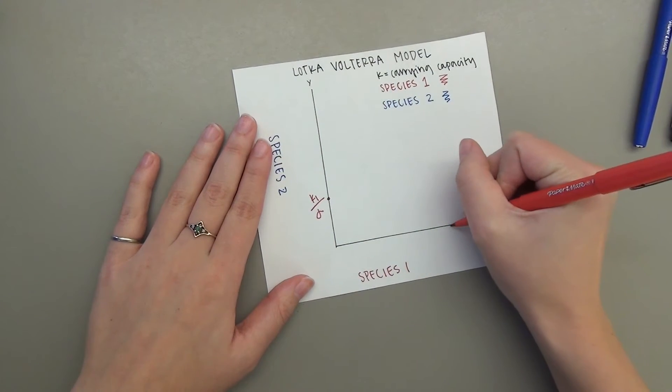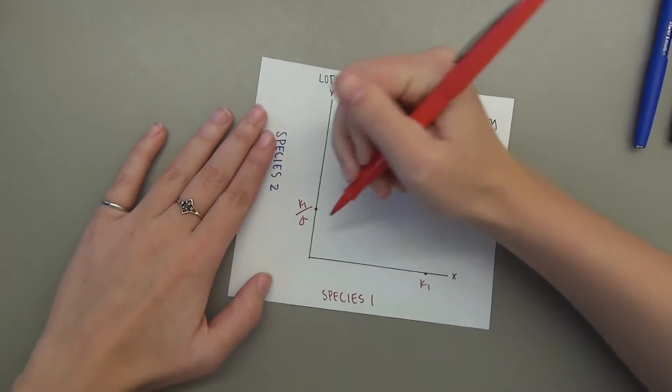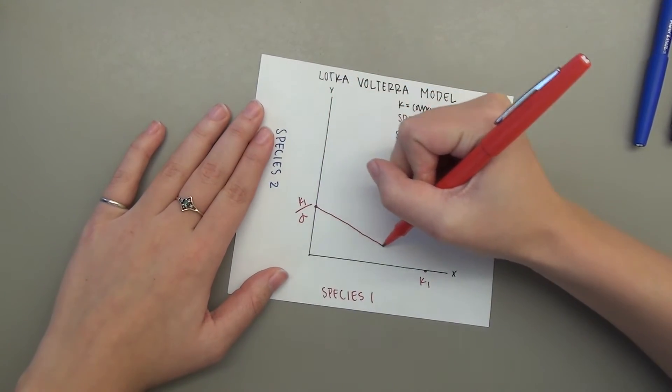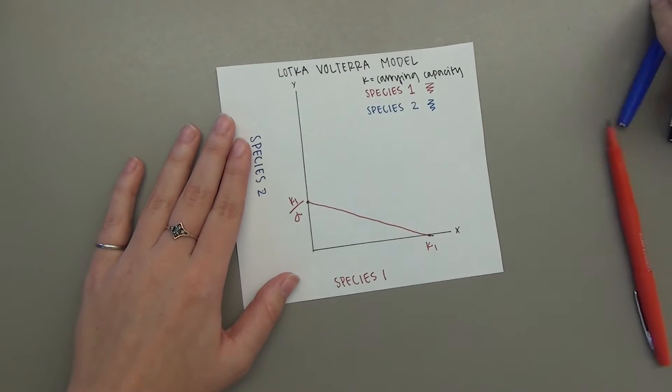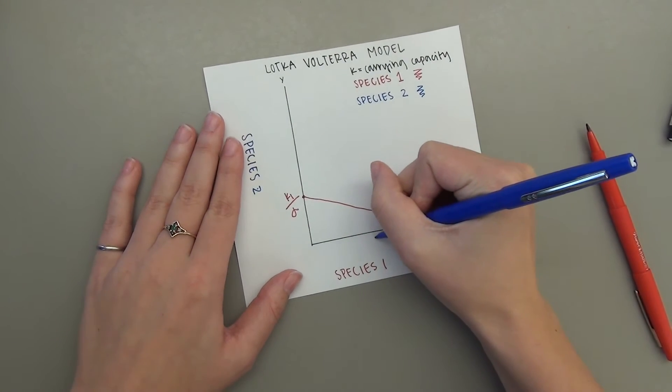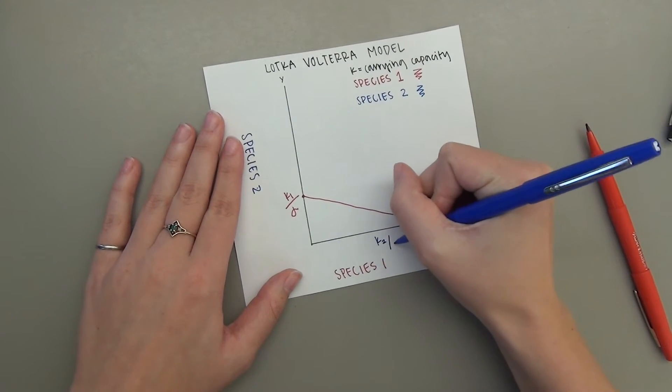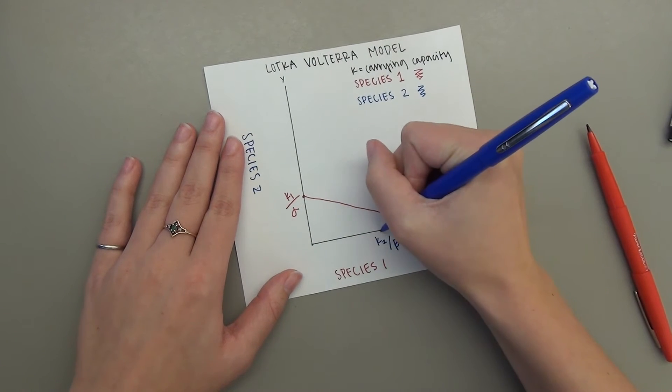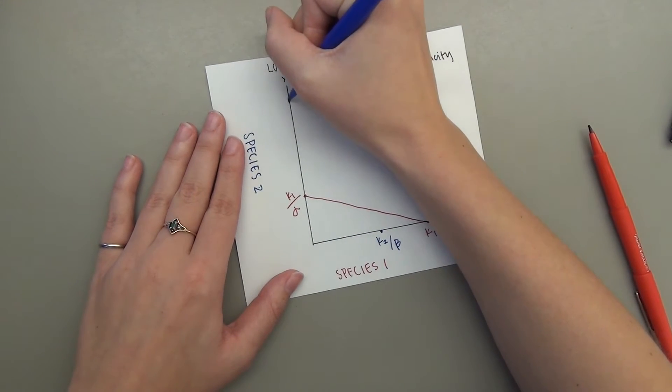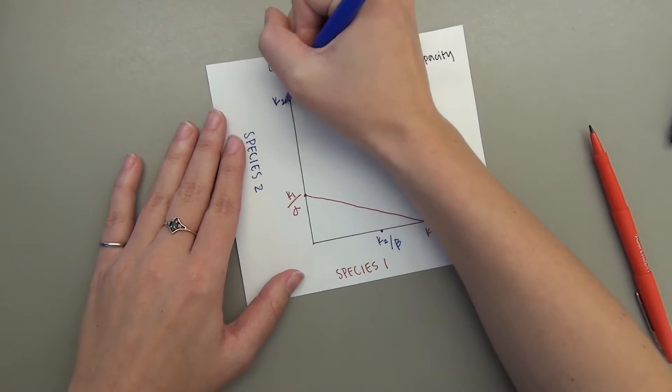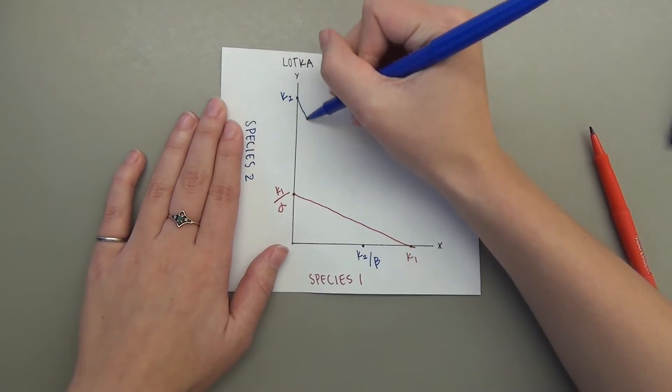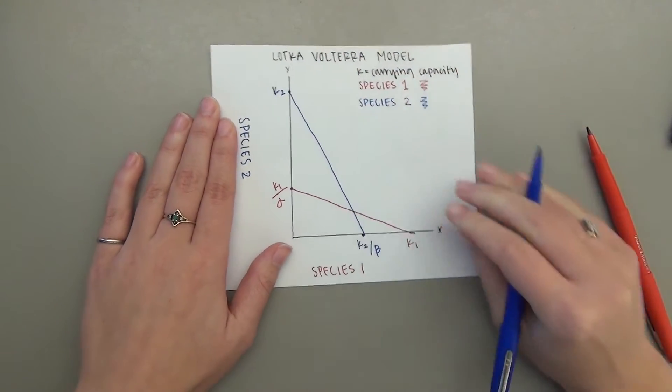These values are measured experimentally and will therefore be given to determine what the outcome of the population will be after competitive exclusion. K1 over alpha will be plotted on the y-axis and a line from K1 over alpha to K1 will be drawn. To determine N2, K2 over beta will be plotted on the x-axis and a line will be drawn from K2 over beta to K2. There are four different graphs that can occur from this.